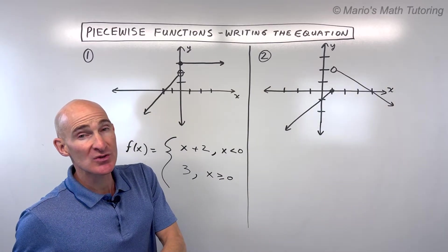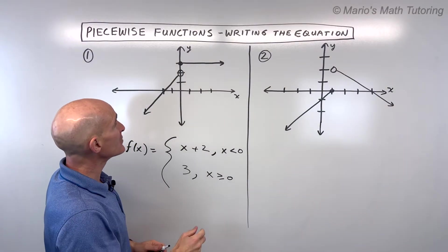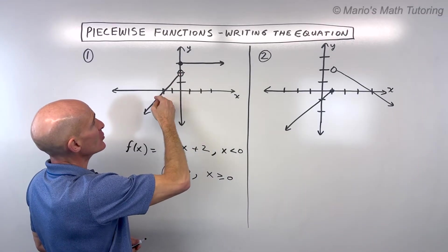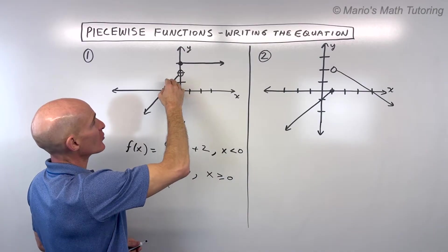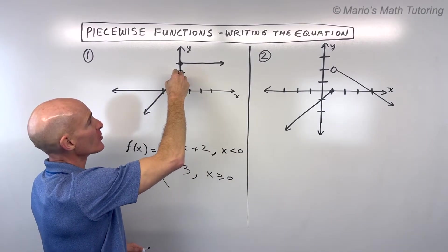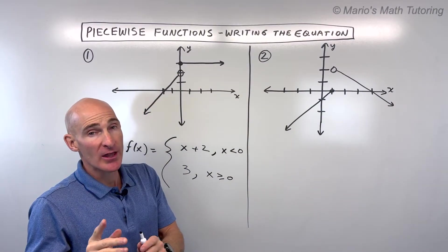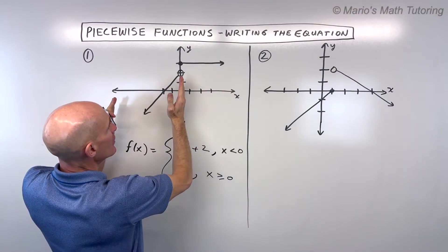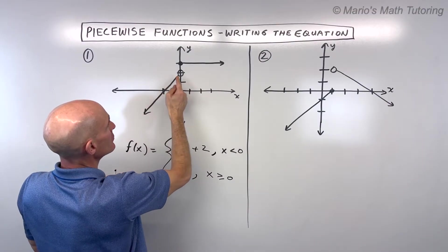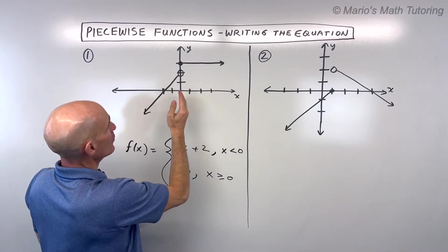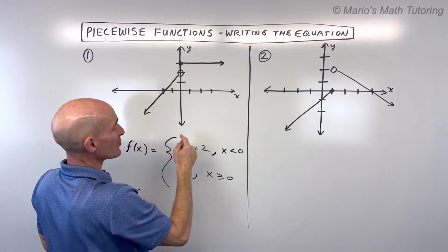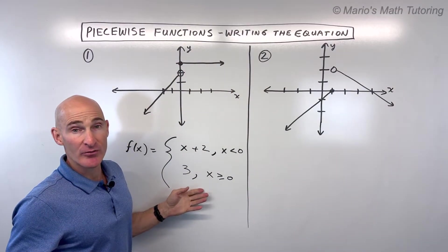Now some mistakes that students sometimes make is they'll start to say, oh, when y is less than 2, because they see this is below 2, but you don't want to do that. You want to think about for what x values am I dealing with. As I scan from left to right, when x is less than zero I'm on this graph here. When x is equal to zero or greater, meaning to the right, I'm on this graph. And so that's how you write your piecewise function.